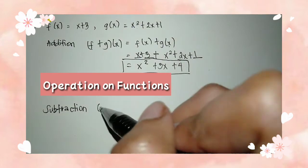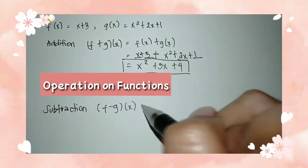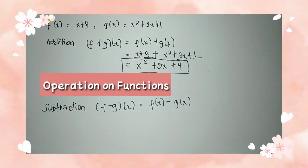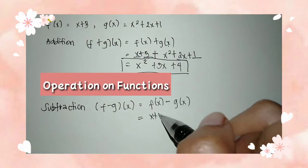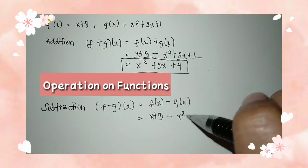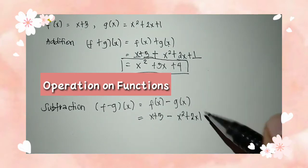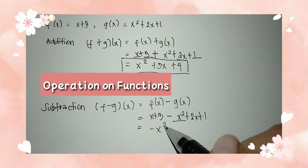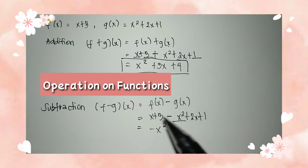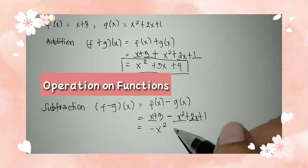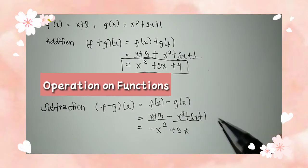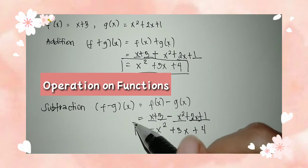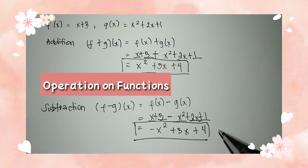Moving on to subtraction. We have f minus g of x is equal to f of x minus g of x. So we have f of x which is x plus 3 minus x squared plus 2x plus 1. We write negative x squared since it has no like term and we carry the negative. Then x and 2x are the like terms, so 2x plus x equals positive 3x. Then 3 plus 1 equals 4. So the correct answer is negative x squared plus 3x plus 4.